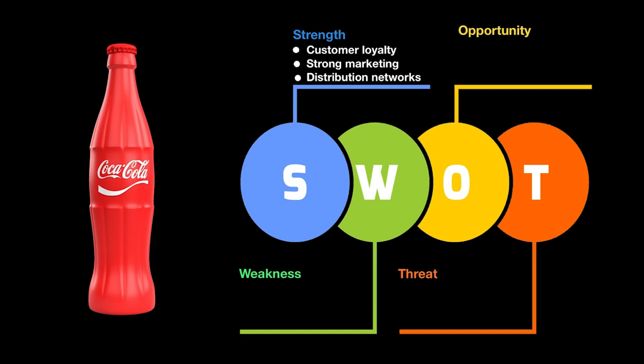When you look at the weaknesses, one big weakness that we don't really realize until we think about it is that Coca-Cola's sole business is beverages — they are highly dependent on selling drinks. Compared to Pepsi, more of Pepsi's revenue comes from selling food items than from beverages. So maybe Coca-Cola is too dependent on just selling beverages.